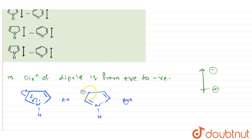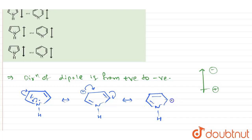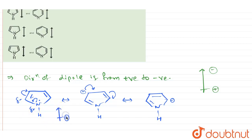Now in the next resonance structure, what will happen is this negative charge will come over here, forming a double bond, and this double bond will form a negative charge. If you see the movement of electrons, the movement is from the nitrogen to the ring, creating a partial positive charge on nitrogen and a negative charge over the ring. Therefore, the direction of dipole would be positive down and negative over here — so the dipole for pyrrole points in this direction.